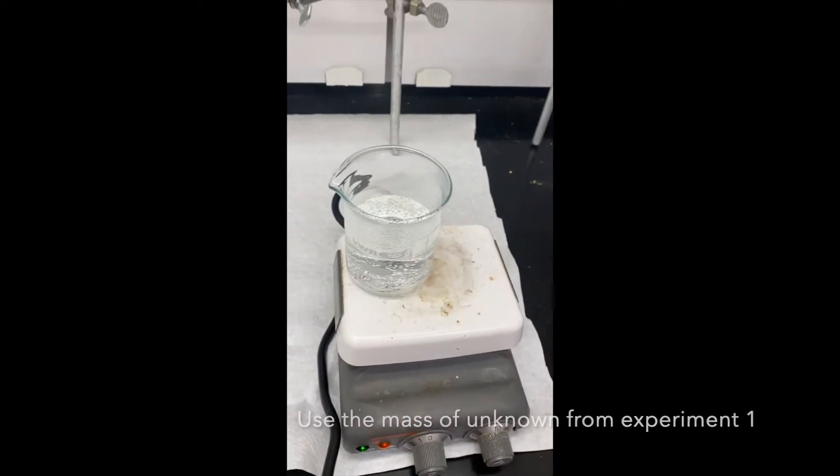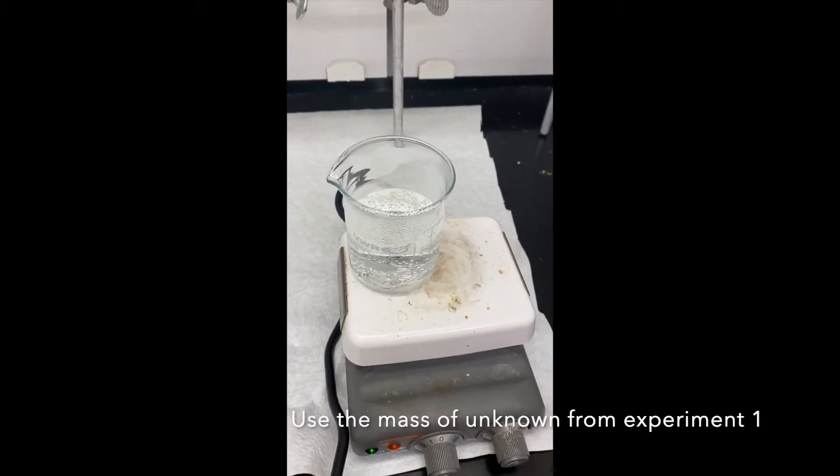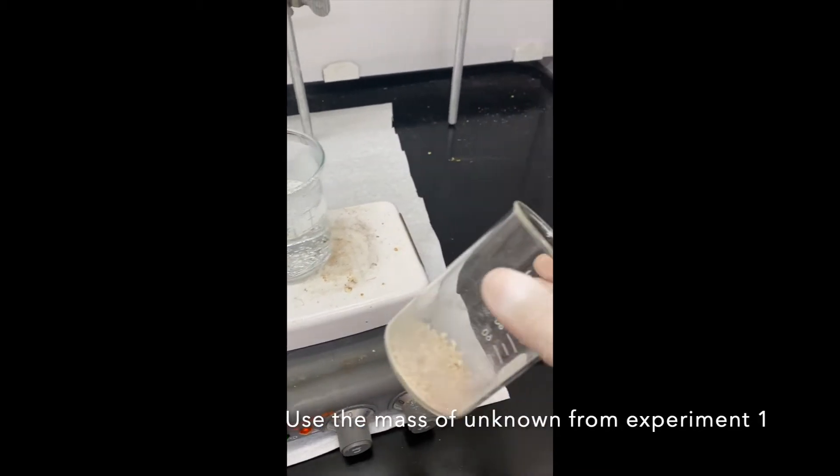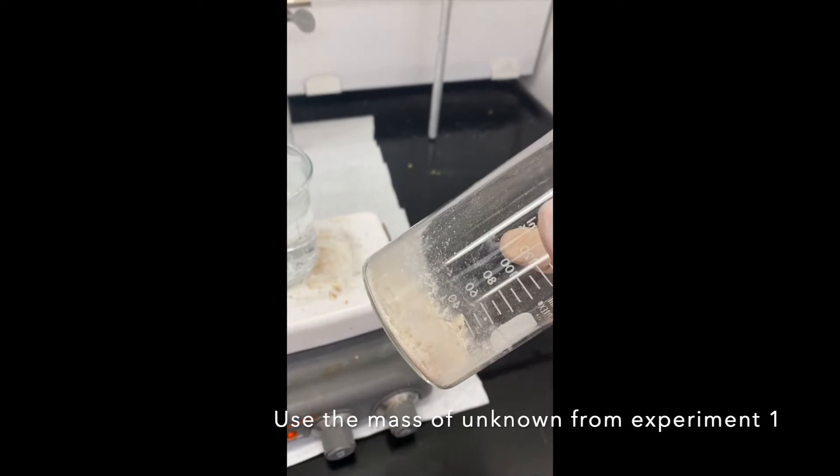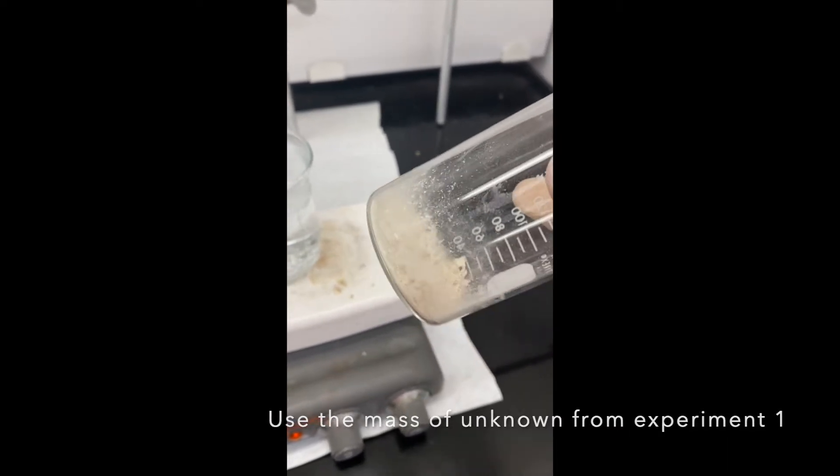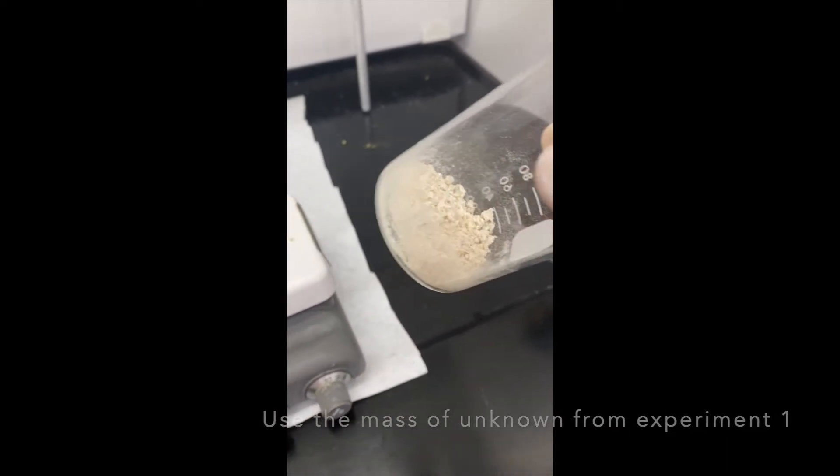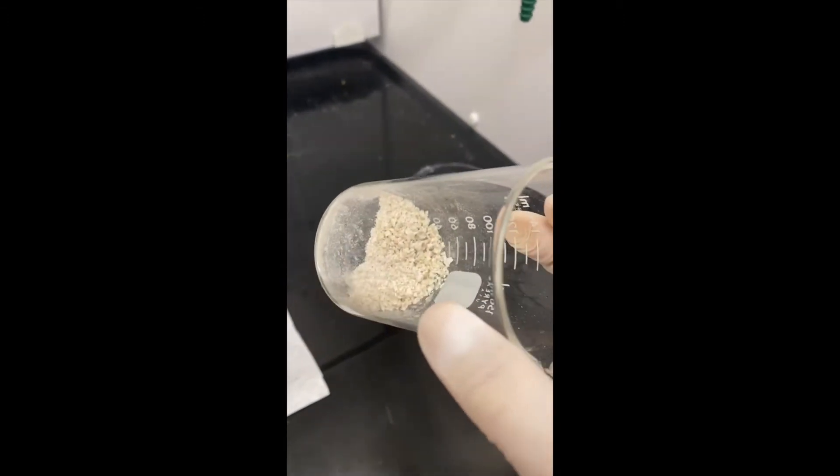All right, so the next step to our experiment is to recrystallize our element. Anytime you do a separation, you probably notice that in the separatory funnel that separation wasn't perfect. You might see that as a result of some kind of discoloration.